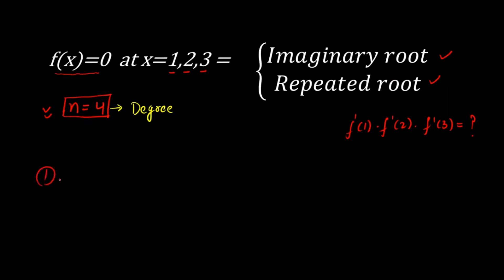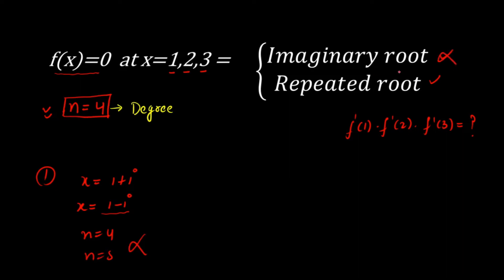First case: suppose the 4th root is imaginary, say x = 1 + i. Since imaginary roots always occur in conjugate pairs, if 1 + i is a root then 1 − i must also be a root. That would make the degree n = 5, not 4. So this case is rejected — the 4th root cannot be imaginary.